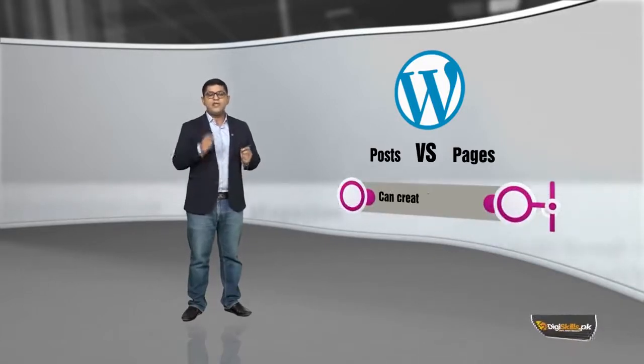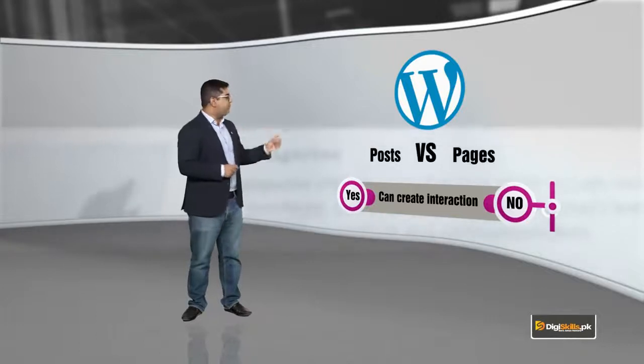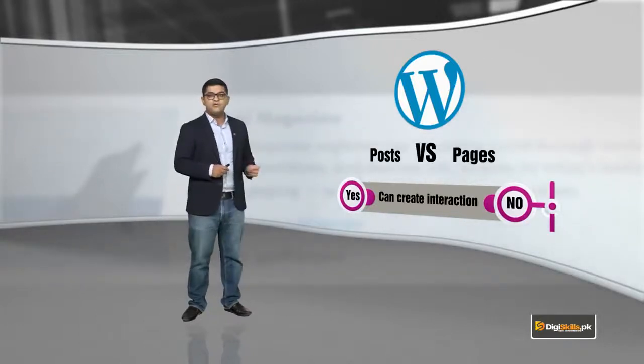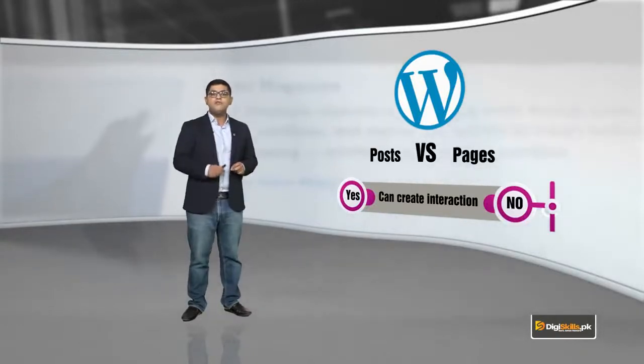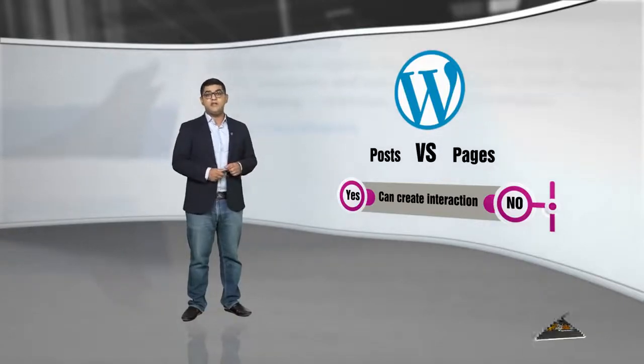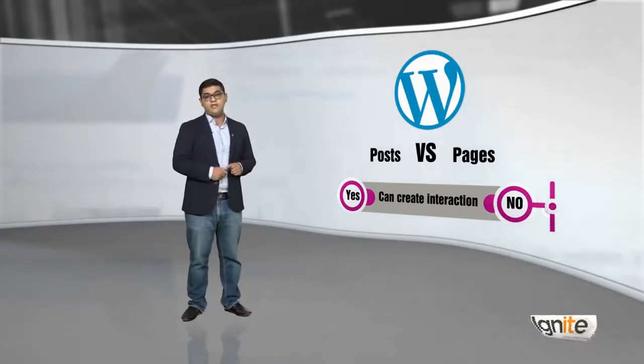Number one: creating interactions. Do WordPress posts or pages have interaction? When it comes to posts, yes, there is interactivity — uspe comments hoti hain, uspe share buttons hoti hain. But when it comes to pages, there is not a lot of interactivity. You can add comments to pages using a plugin if you want, but pages are not supposed to be interactive or social.